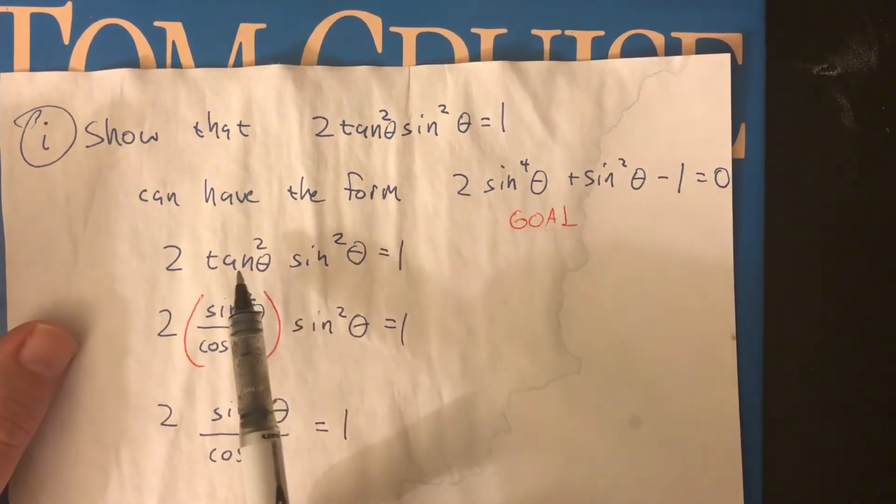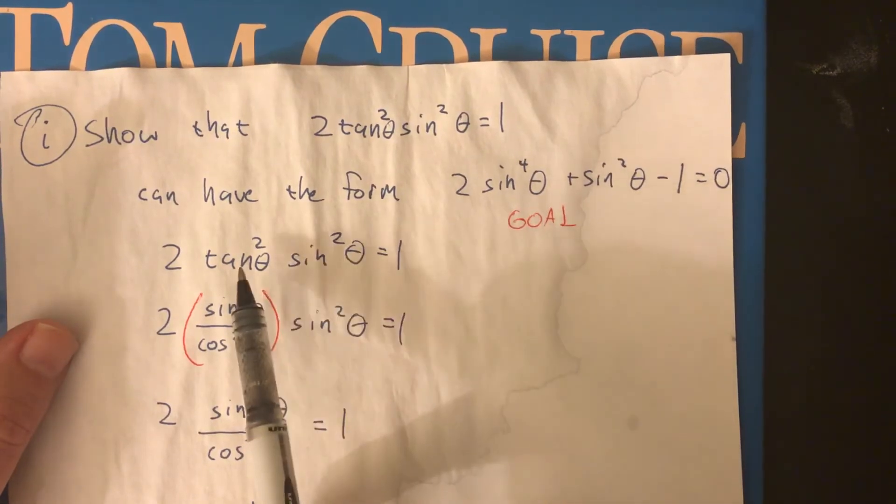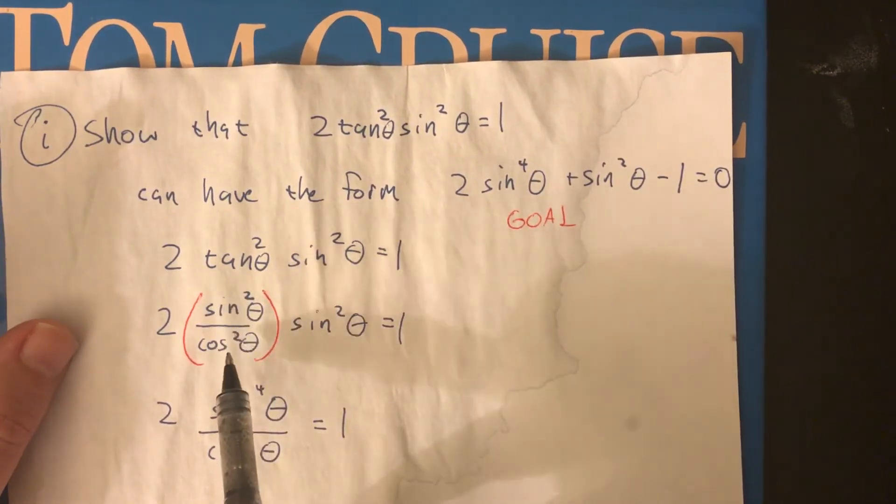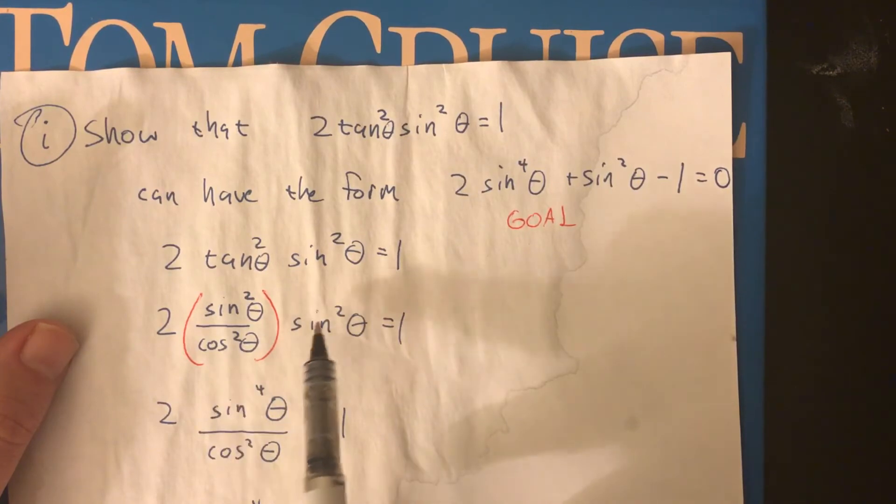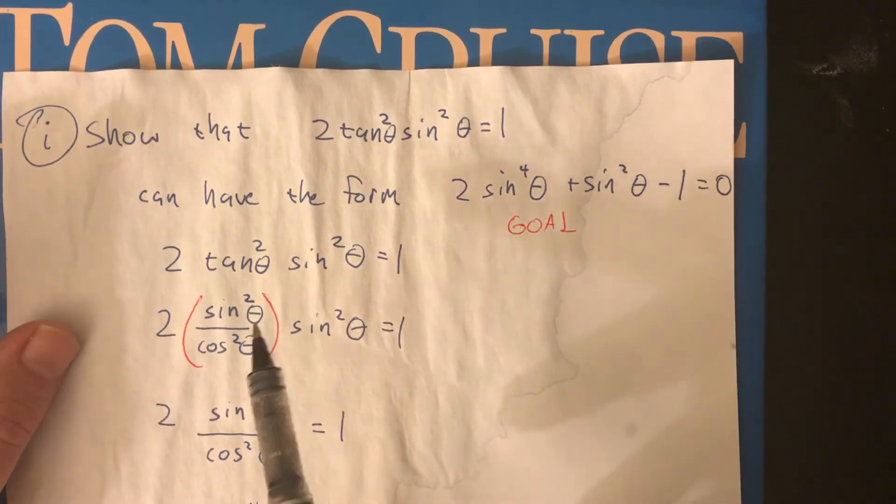So we start off with the full equation. Okay, it's got tan in it, but our goal only has sine in it. So I said, get out of your tan, and I switched in sine squared over cos squared. Multiplying sine squared by sine squared turns it into sine to the 4th. And since the goal doesn't have cos in it, it only has sine in it, I said, this cos on the bottom,